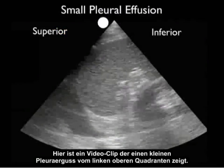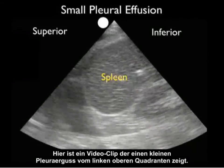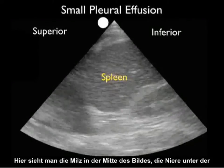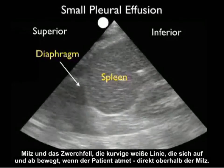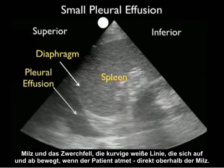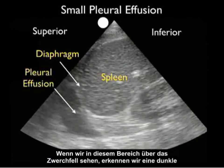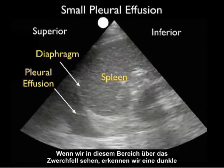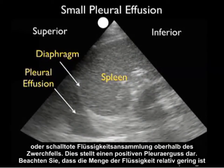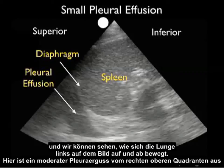Here's a video clip showing a small pleural effusion as taken from the left upper quadrant view. We see the spleen in the middle of the image, the kidney inferior to the spleen, and the diaphragm — the curving white line moving up and down as the patient breathes — right above the spleen. As we look into the area above the diaphragm, we appreciate the presence of a dark or anechoic fluid collection above the diaphragm. This represents a positive pleural effusion. Notice that the amount of fluid is relatively small, and we can actually see the lung moving up and down to the left of the image.